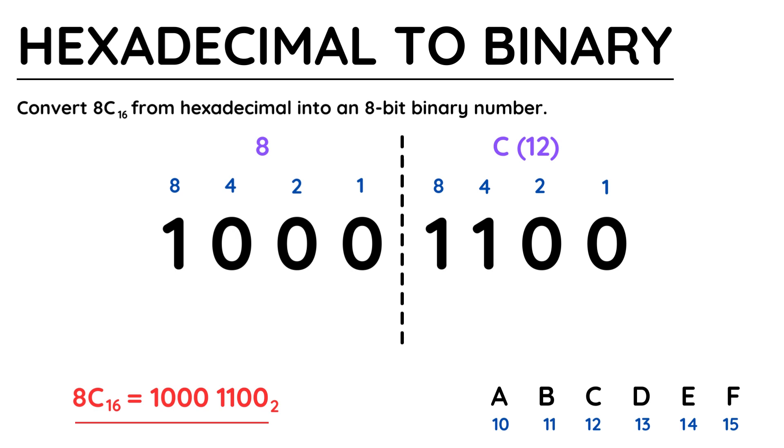I've put a small 2 after the binary number in my answer because binary is a base 2 number system, as it only has 2 possible values, 0 and 1.